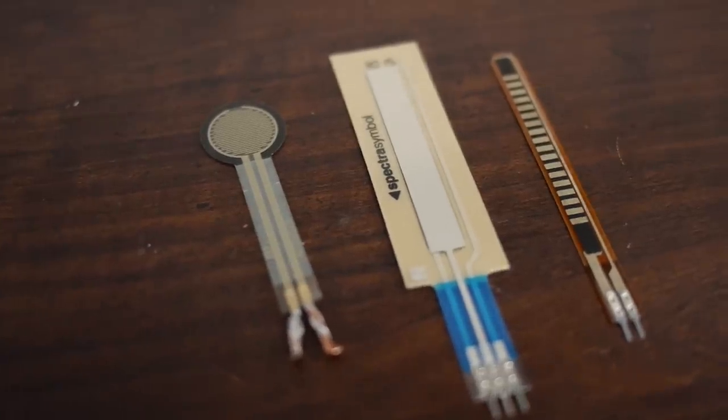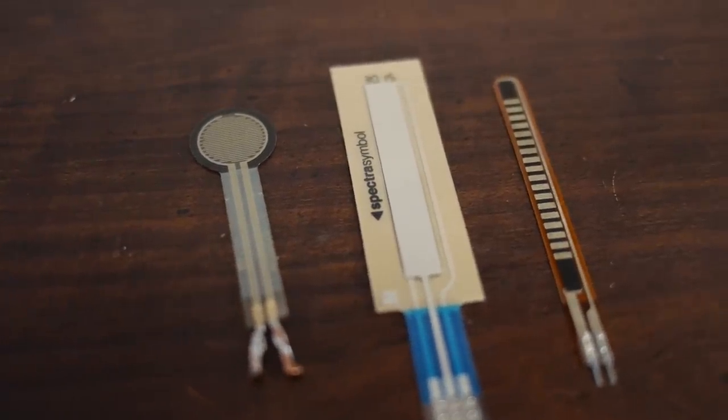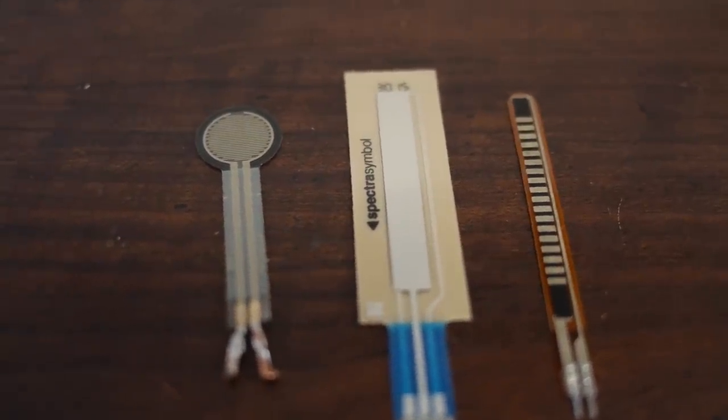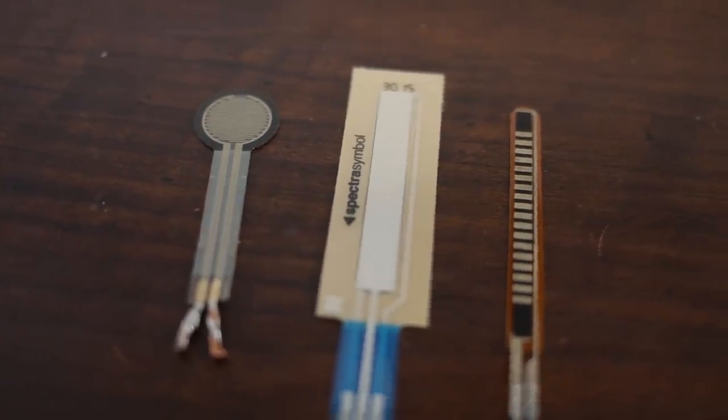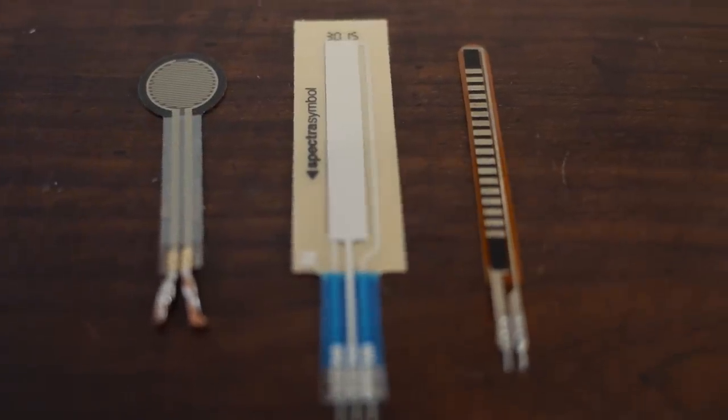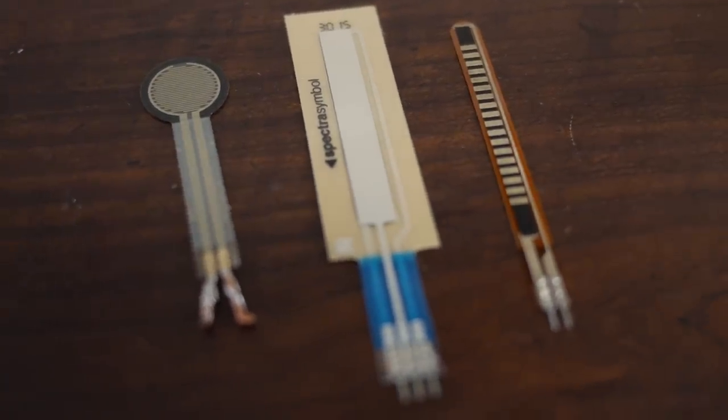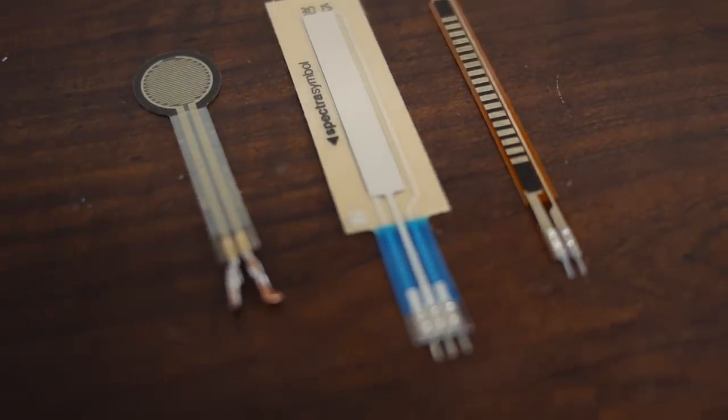Another type called cermet, or thick film, uses a paste combining ceramic and metal, designed to have the optimal properties of both materials. They have good temperature stability, low noise, and good voltage ratings, but low surge current properties. This method is most commonly used to make potentiometers and surface-mount resistors.